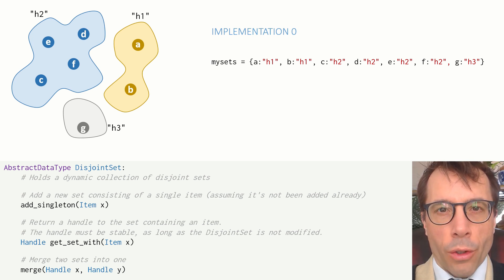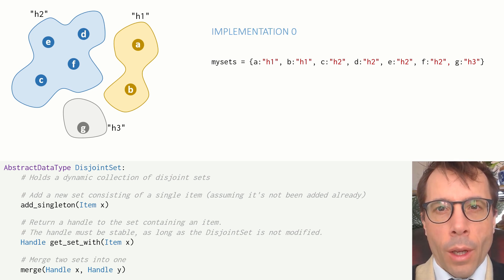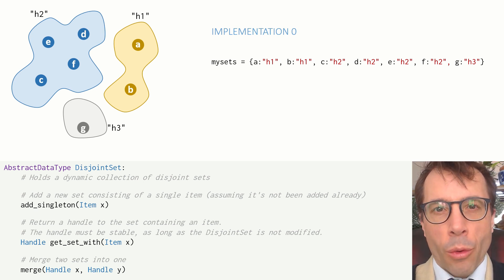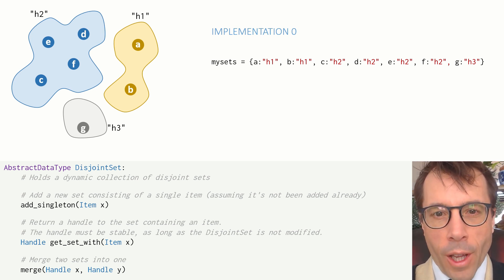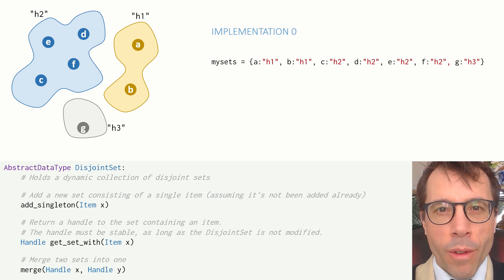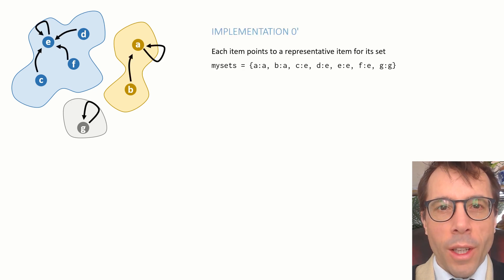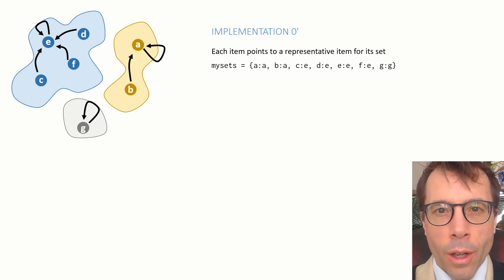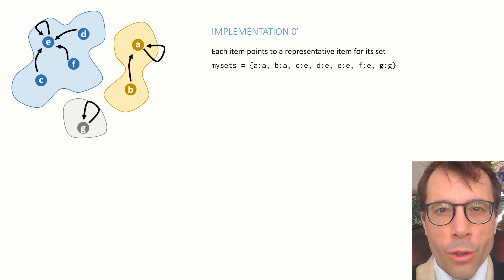Here's the crudest implementation possible — the engineer's implementation. We'll just use a dictionary, let the keys be the items we want to store, and let the values be some arbitrary set identifiers. Here I've made them strings with a slightly silly prefix 'H' for handle. This really is crude, and crude is good if it lets you ship your product faster. But this is an algorithms course, so let's try to be more refined. There's an obvious simplification: there's no need to bother inventing silly strings to refer to the sets when we have some perfectly good handles already — namely the items themselves. Let's say that we'll pick some arbitrary representative for each set, and we'll make all the other items in the set point to it.